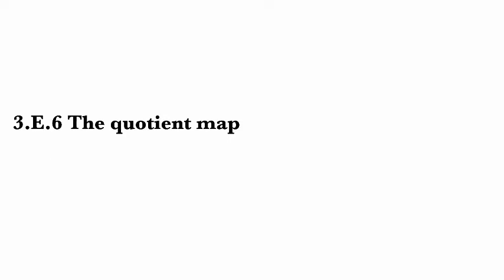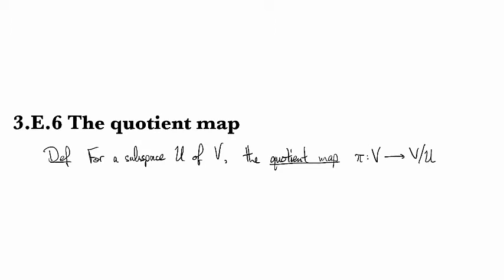The quotient map is a canonical linear map that accomplishes the modding out of a particular subspace, or the quotienting out by a particular subspace. So for a subspace u of v, the quotient map goes from v to v mod u.